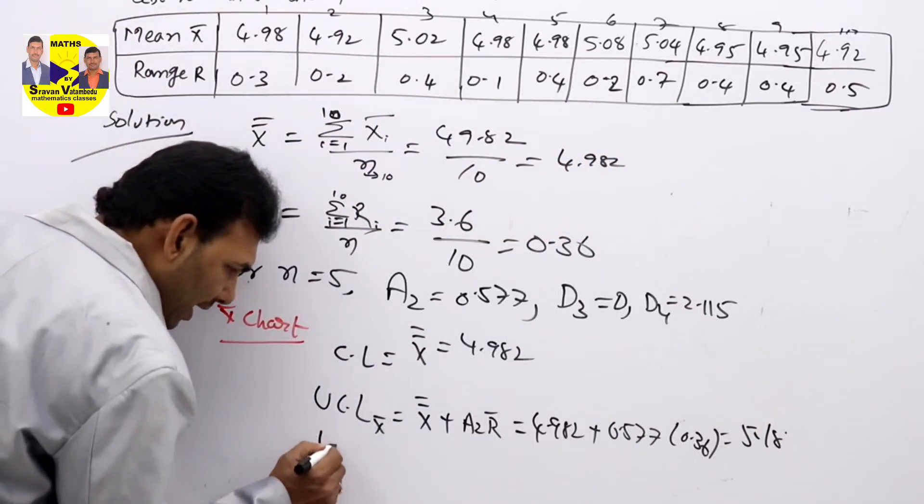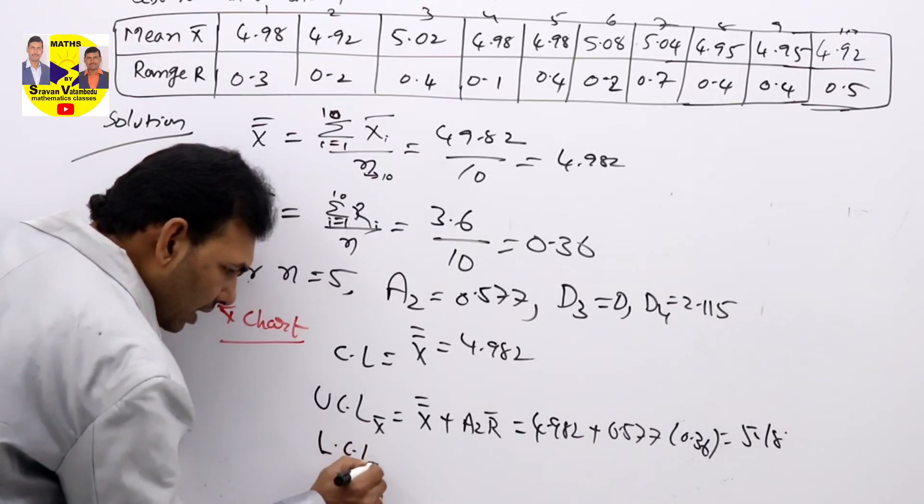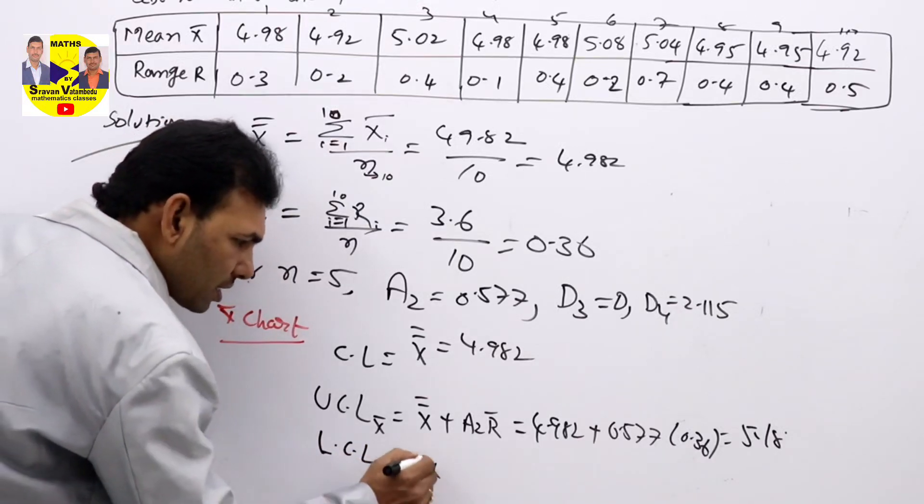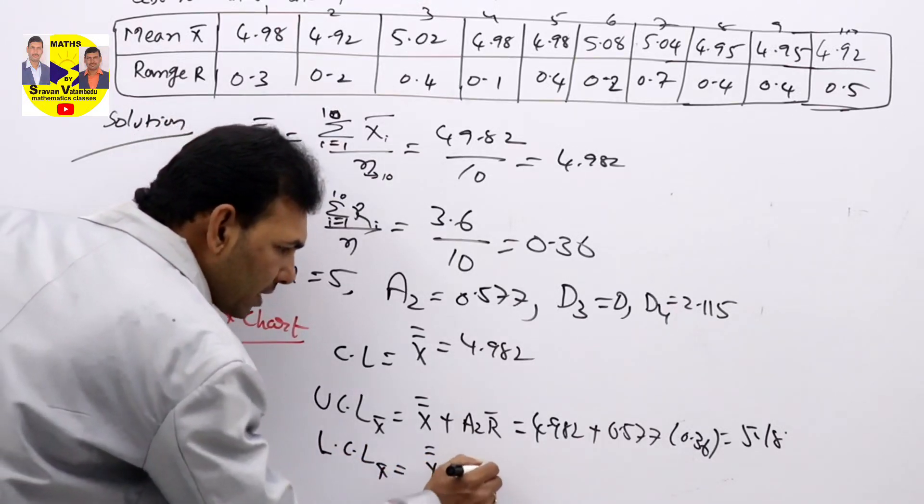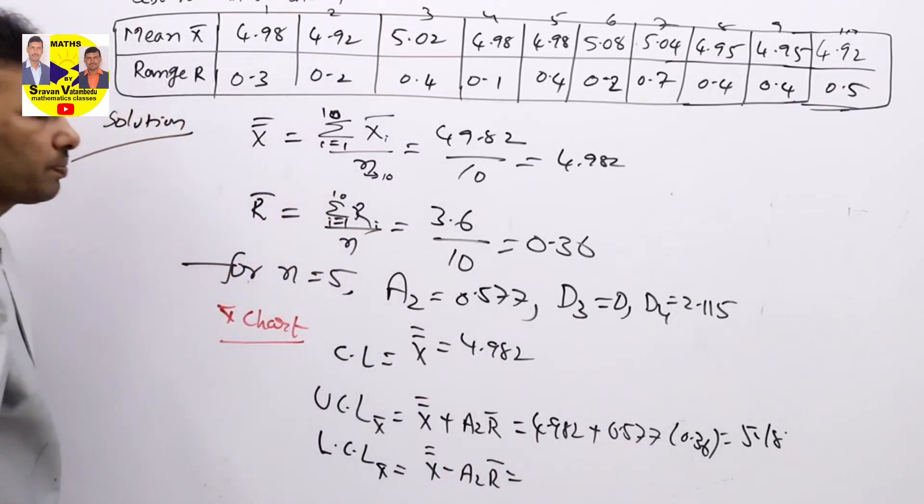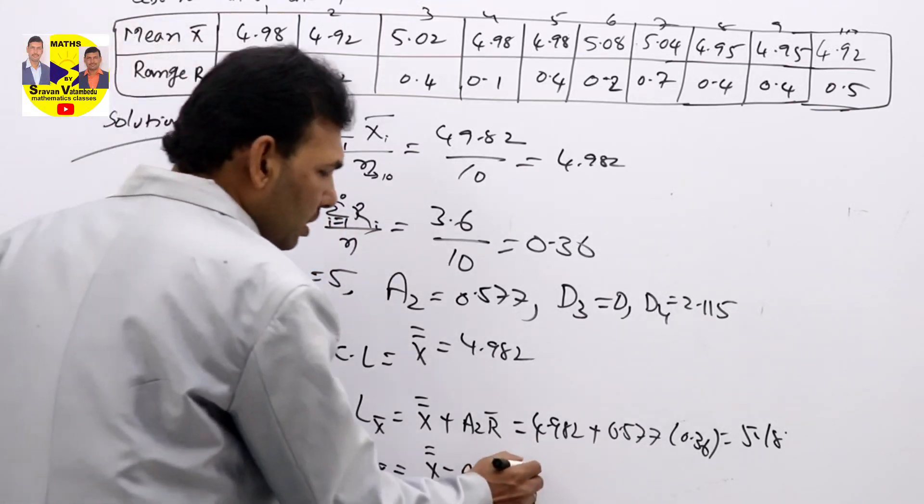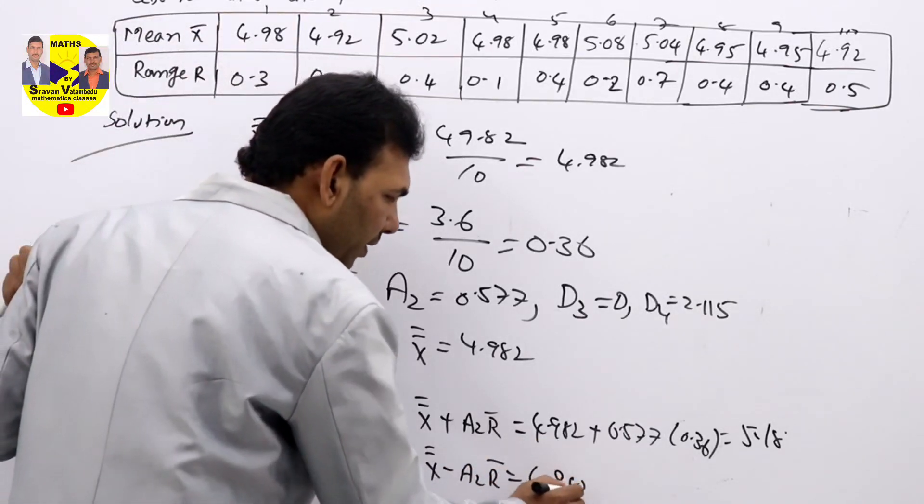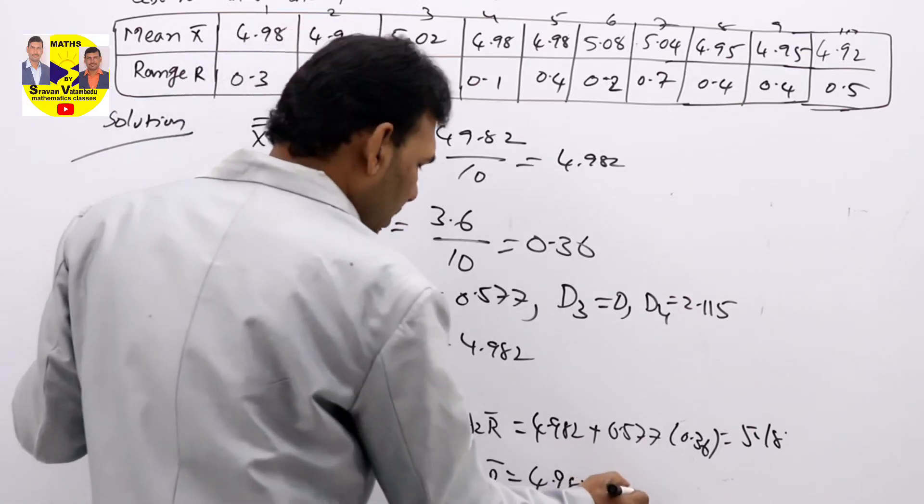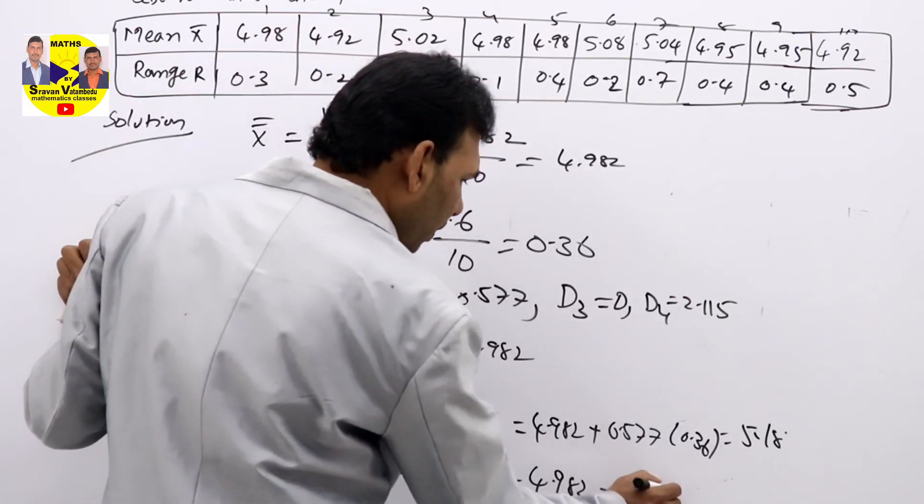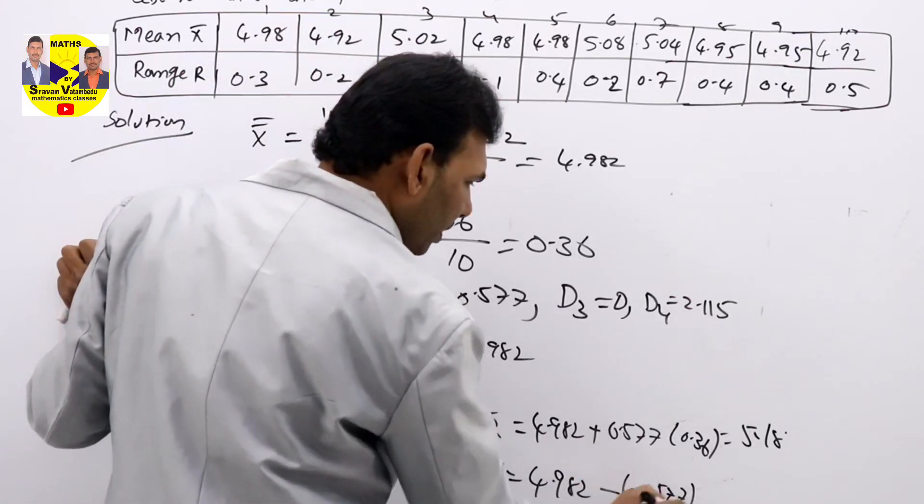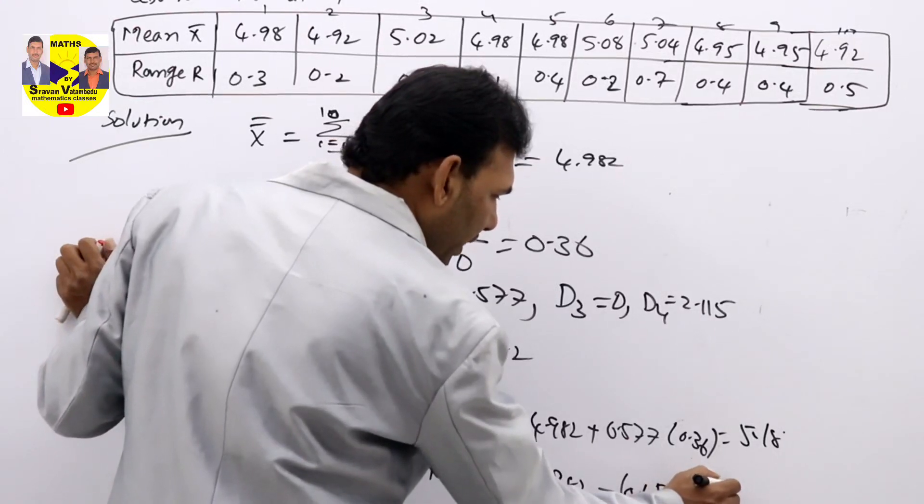Similarly, LCL X bar—that is X double bar minus A2 R bar.